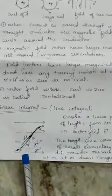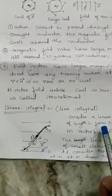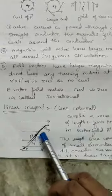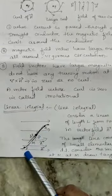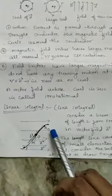Go through the diagram. You have to consider the linear path of length L from P to Q in the vector field represented as A.